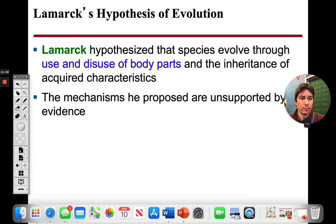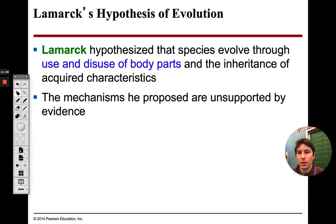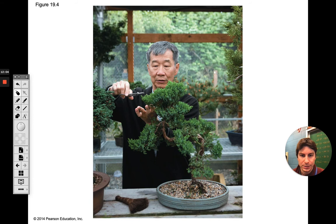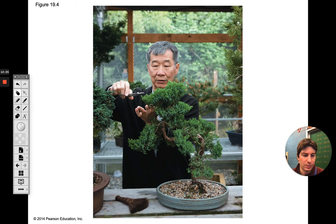Lamarck was around the same time as Darwin, maybe a little before. He hypothesized that species evolved through use and disuse of body parts over time. Using a bonsai tree as an example — if you cut the tree in a certain pattern, you're no longer using that branch, and according to Lamarck, if the tree reproduces, the next generation shouldn't even have that branch because the previous generation wasn't using it.